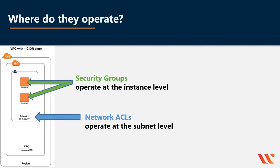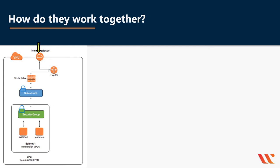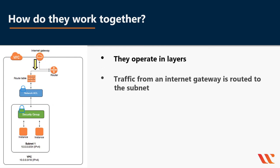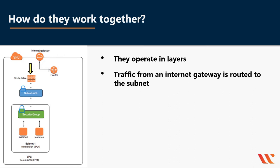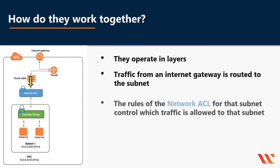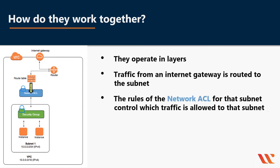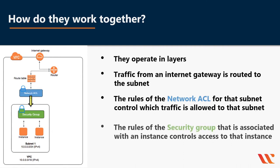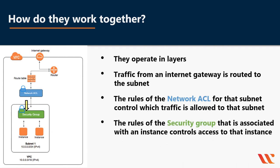Let's observe how they work together — they operate in layers. When traffic is coming in, it is routed using the routing tables to the subnet. The rules of the network ACL for that subnet control which traffic is allowed to that subnet. The rules of the security group associated with an instance control access to that instance.